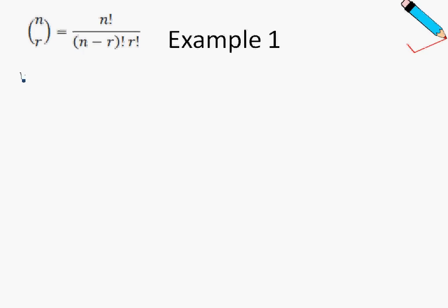For example, I have n choose 1, which can also be written like that. In the denominator, I'll have 1 factorial. Where did I get this 1 factorial? It just comes from the number 1 over here. And in the numerator, I will start with the term that I see over here.